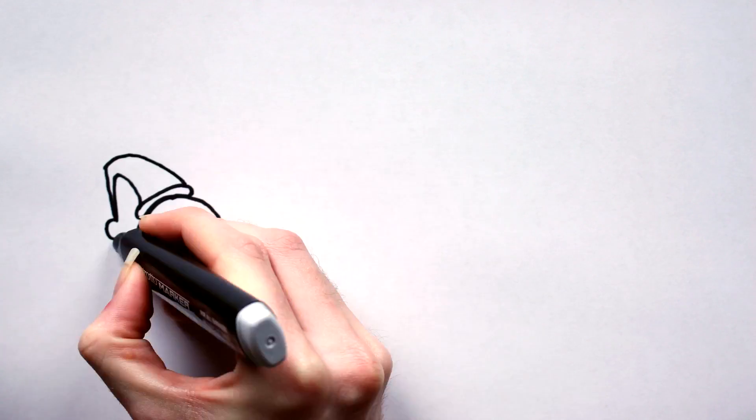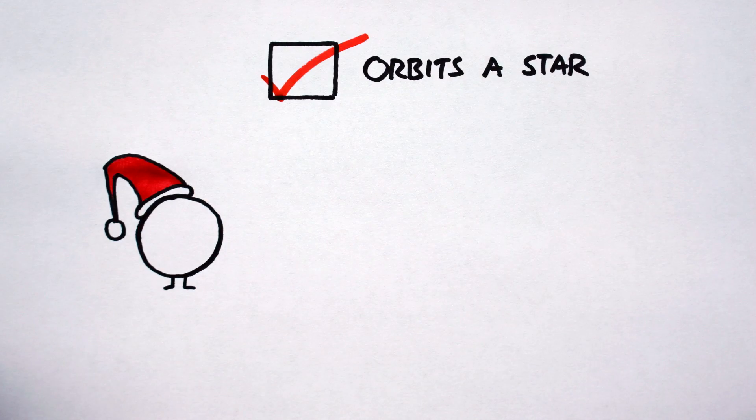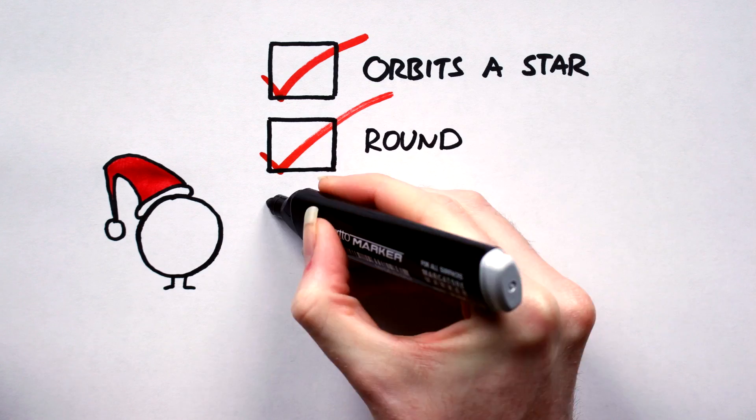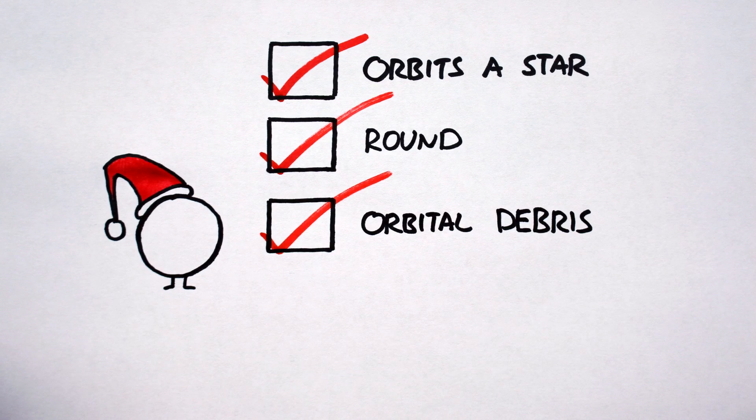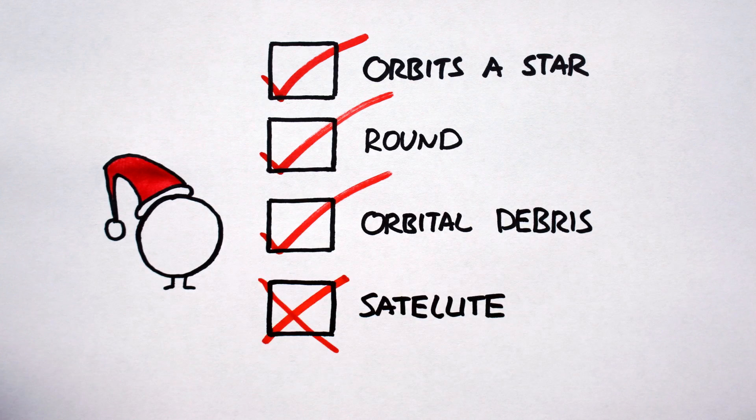A dwarf planet is a celestial body that: A. orbits a star, B. is roundish in shape, C. has not cleared its orbital path of any extra debris, and D. is not a satellite.